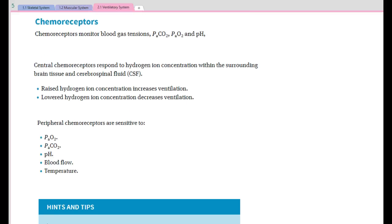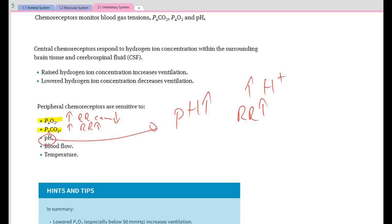Chemoreceptors, we looked at it very quickly before. Pressure of oxygen, pressure of carbon dioxide. If pressure of oxygen increases, then respiration can decrease. If pressure of carbon dioxide increases, then respiration rate will increase. So if we have a pH increase, which means an increase in acidity, which is normally due to an increase in hydrogen ions, then respiration rate will increase so that we can deliver more oxygen. We don't need to worry about blood flow nor temperature.